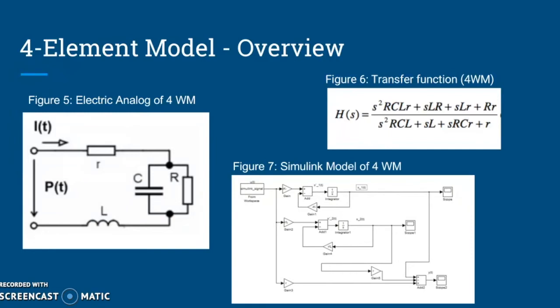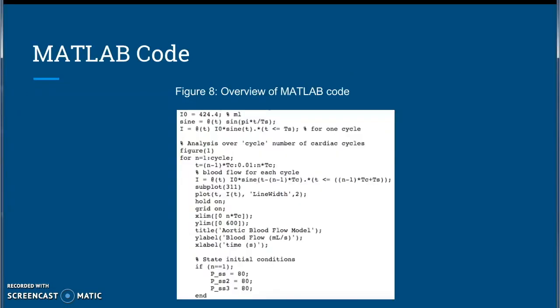The four-element model offers a relatively good approximation to the real biological system, however it is also the most complicated. The main difference between the four-element model and the others is that it takes into account blood flow inertia, represented as an inductor. The electric analog of the four-element model is shown in figure five. Figure six shows the transfer function of the four-element model, which is clearly a second-order system. Figure seven shows the Simulink model, which consists of two feedback controllers and a feed-forward controller.